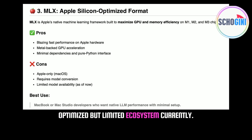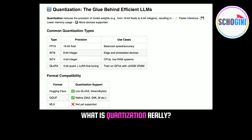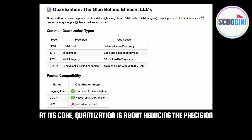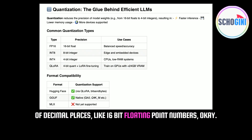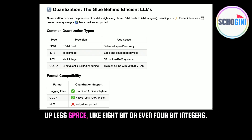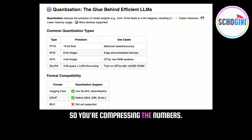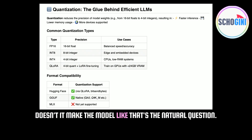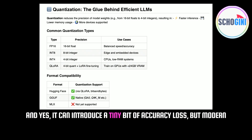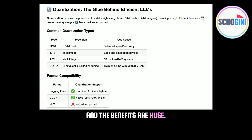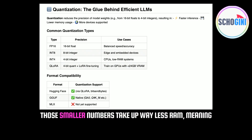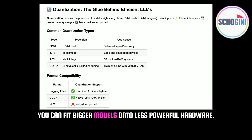Now, quantization — what is it really? At its core, quantization is about reducing the precision of the numbers the model uses internally. Instead of using highly detailed numbers with lots of decimal places, like 16-bit floating point numbers, you use simpler numbers — often integers that take up less space, like 8-bit or even 4-bit integers. Yes, it can introduce a tiny bit of accuracy loss, but modern quantization techniques are surprisingly good at minimizing that. And the benefits are huge: faster calculations, much lower memory usage, and potentially better compatibility because some chips have special instructions for handling lower-precision numbers really efficiently.